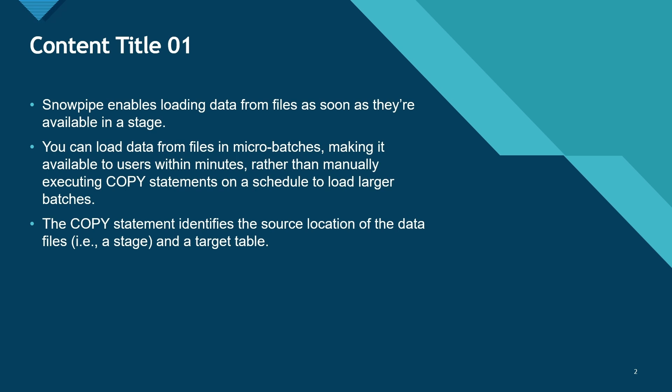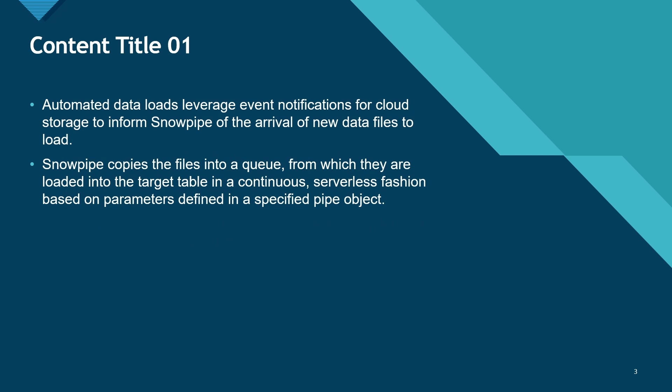Now, how does Snowflake know that it has to trigger the pipe? It is done via event notification. When we create a Snowpipe, Snowflake creates an SQS for us at the backend and gives us the details of that notification channel. As soon as new files are placed into the S3 folder, we enable event notification and use that channel to push notifications to Snowflake. Snowflake then checks the stage, runs the copy command, and loads the files into a queue in a continuous and serverless way.